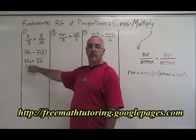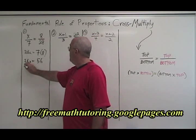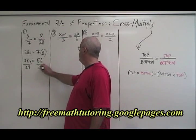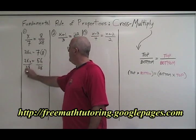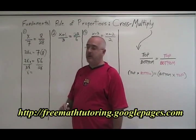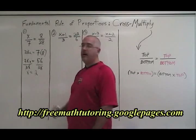Now, since our x is being multiplied by 28, we divide both sides of the equation by 28. These cancel and we have x isolated. And 56 divided by 28 is equal to 2. We have our answer.